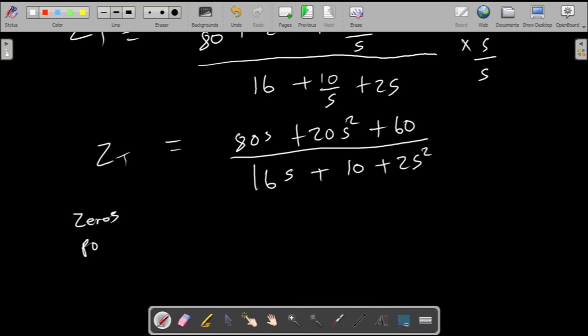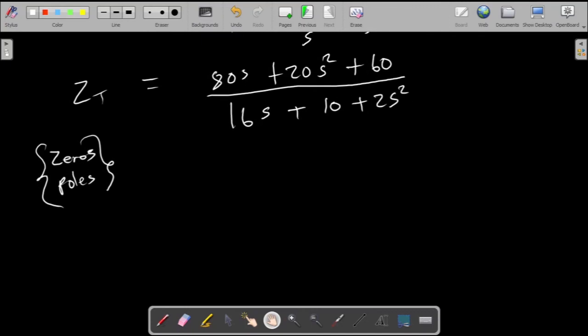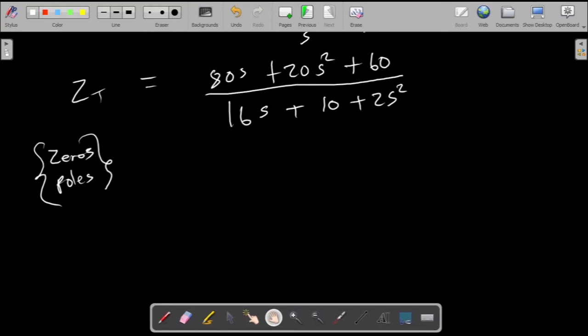Because after finding the transfer function, the question asked for the zeros and the poles. As I said, the zeros come from the numerator and the poles come from the denominator. So those are the factors or the roots of our expressions at the top and at the bottom. Now we just have to simplify our expressions here.